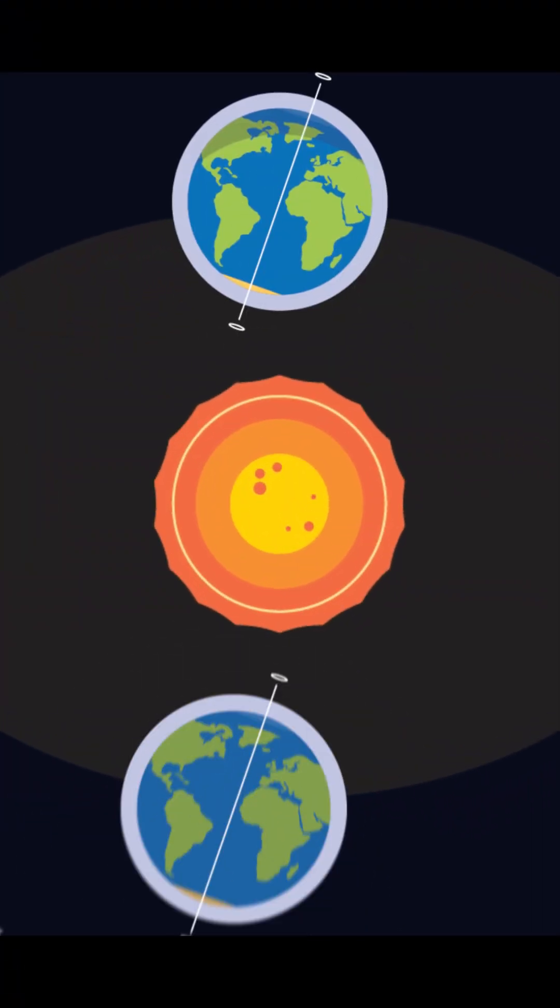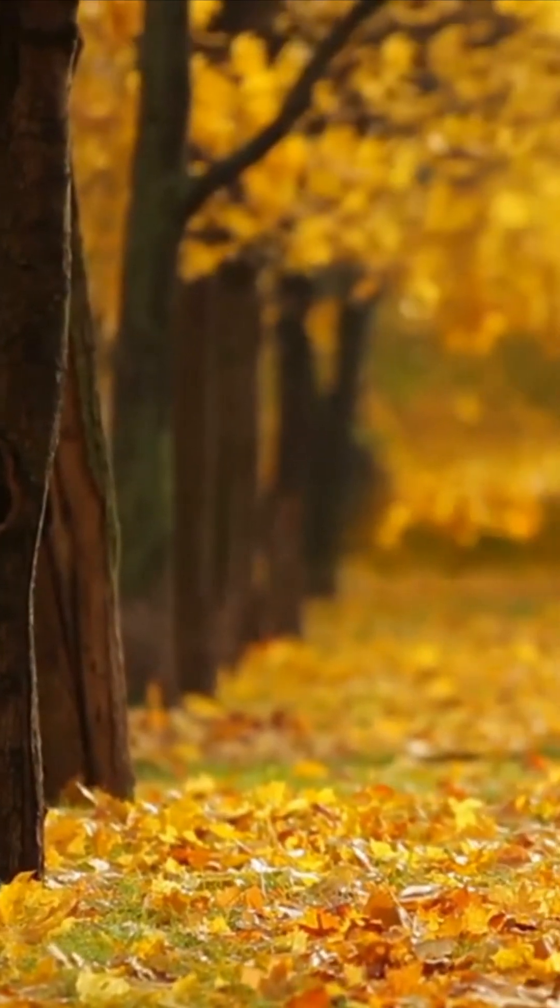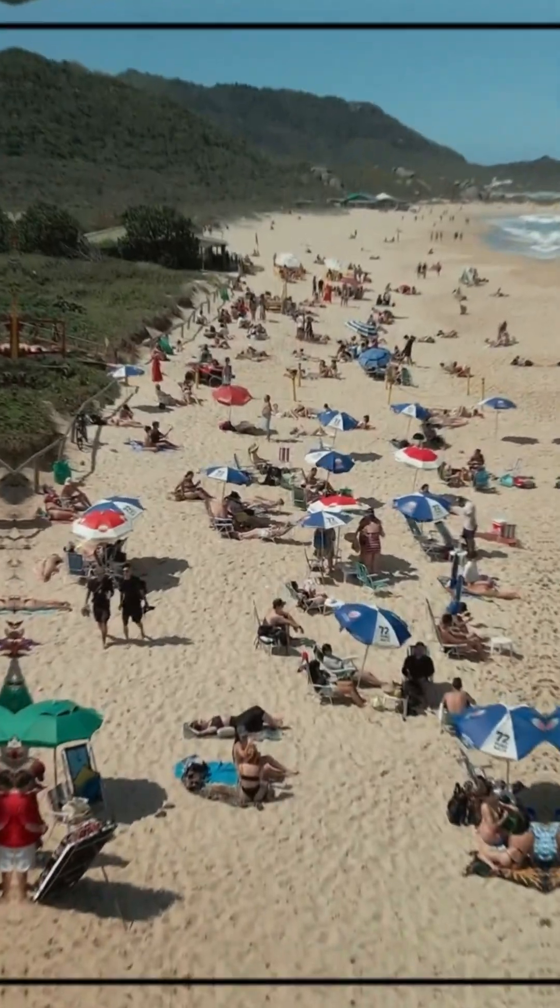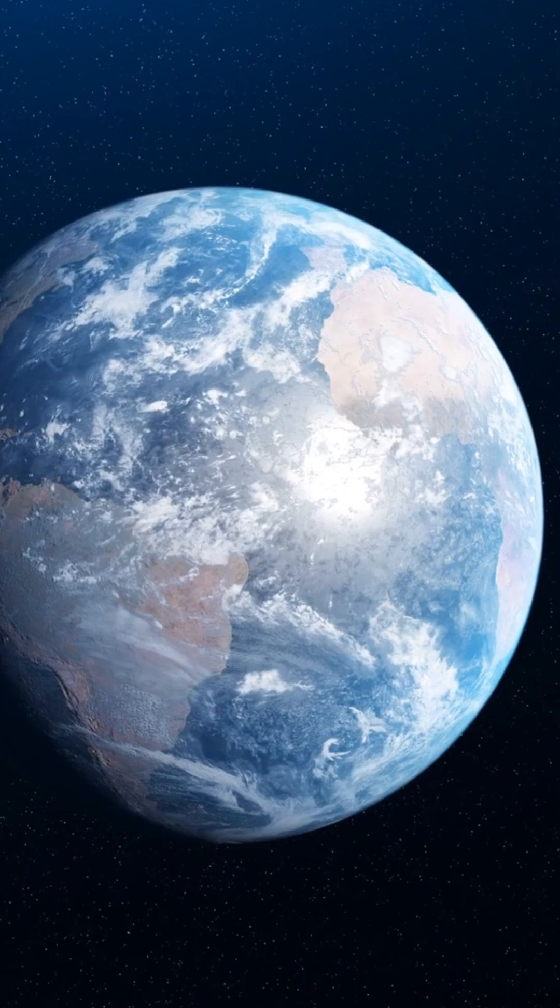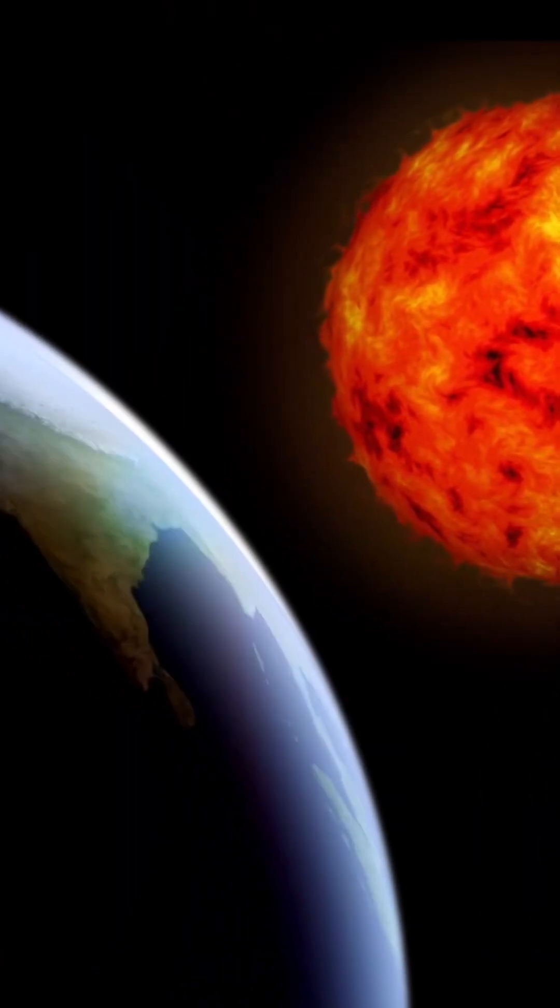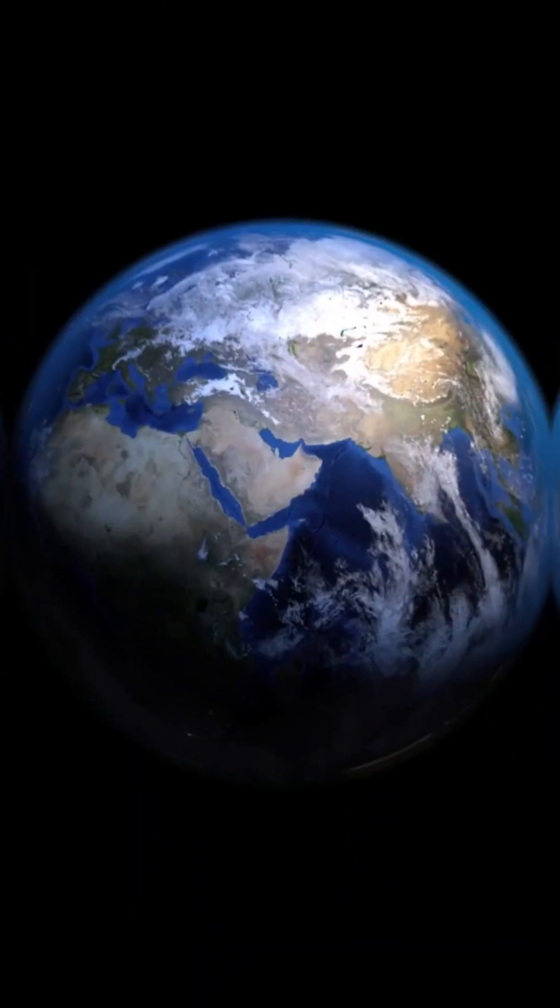Spring and autumn are in between seasons when the Earth isn't tilted directly toward or away from the sun. So, next time you feel the seasons change, remember it's all thanks to Earth's tilt and orbit. Pretty cool, right?